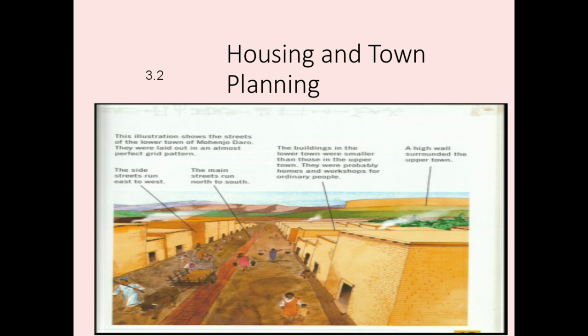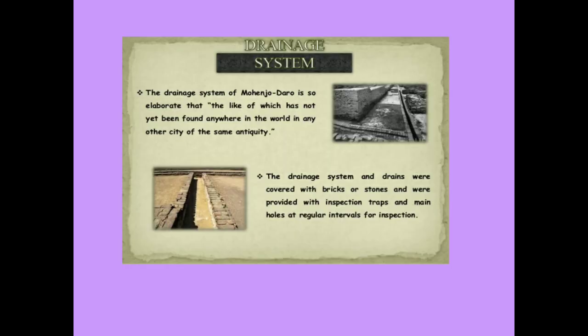Housing and other structures of the Harappan Civilization were mainly built with big bricks. Stones were also used for construction. Rooms were built around a central courtyard, as clearly shown in the picture. Houses had wells, bathrooms, and toilets. There was an excellent drainage system in which big bricks and wooden conduits were used. Streets were covered with drains built with bricks.